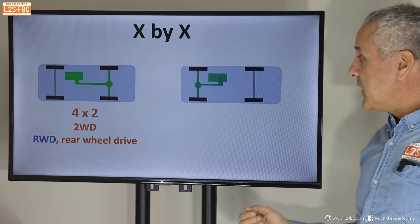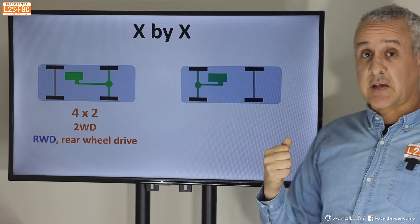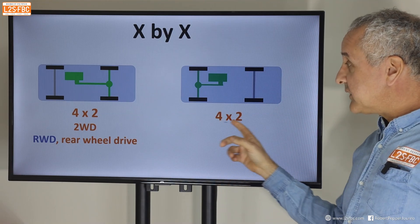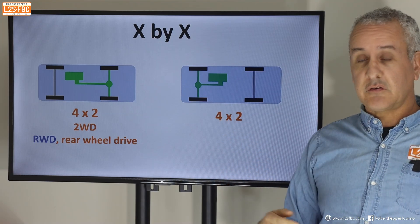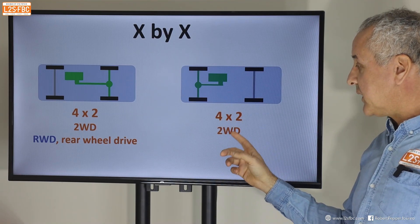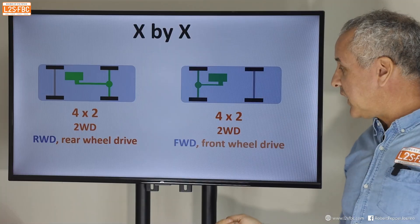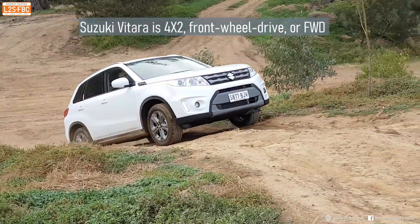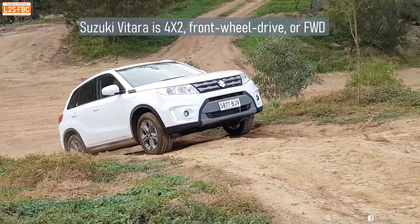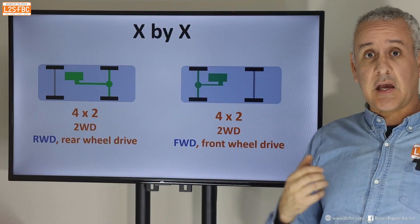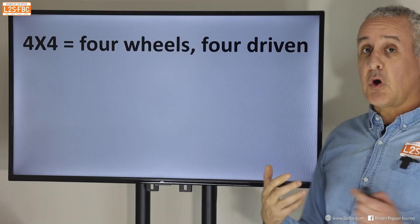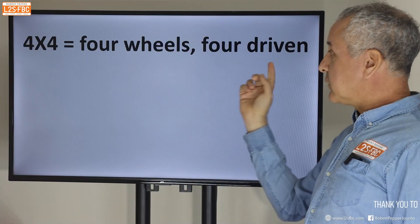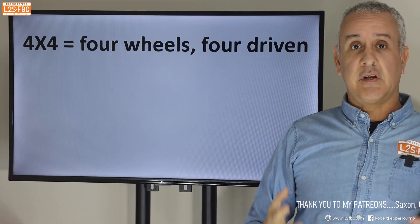We can also call this rear-wheel drive because the back wheels are driving, abbreviated to RWD. Similarly, we can take the exact same car but this time drive the front wheels — that is still a four-by-two, still four wheels, two driving. We still call it two-wheel drive, but now it's FWD. The F stands for front-wheel drive, not four-wheel drive — that's the difference between the two.